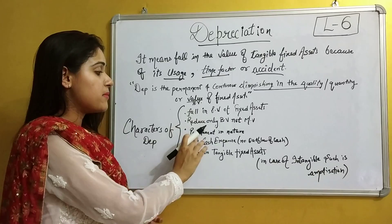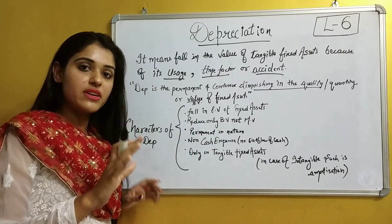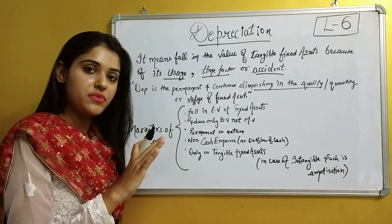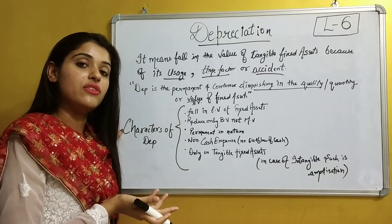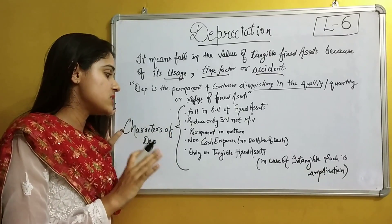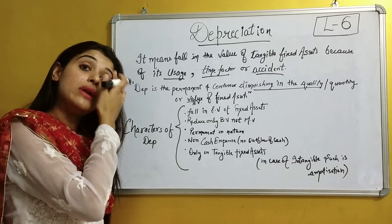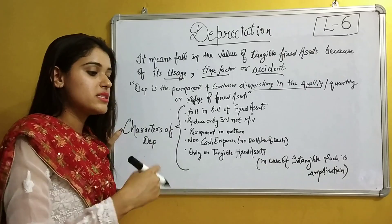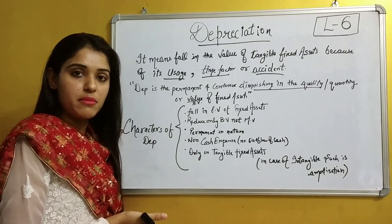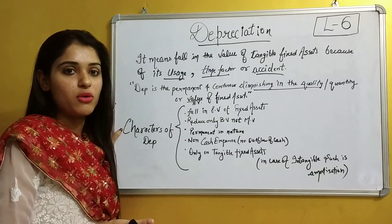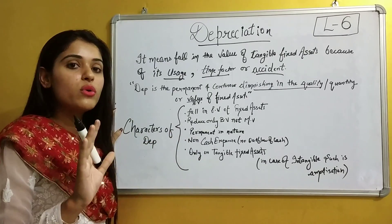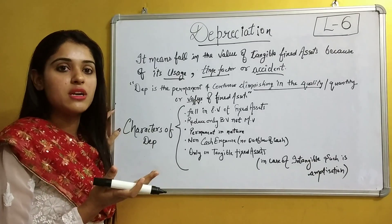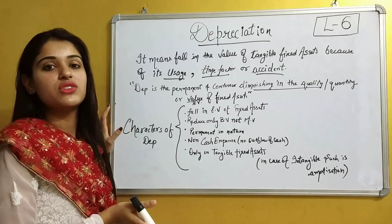Next characteristic is that it is permanent in nature. Once we reduce our fixed asset and say that this amount is our depreciation, we can't take it back. Next is non-cash expenditure. When we depreciate our fixed asset, we are not paying some outside party that amount — there is no outflow of cash. So when maintaining the cash flow statement, it is treated as a non-cash expenditure.